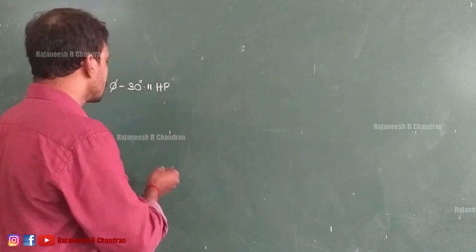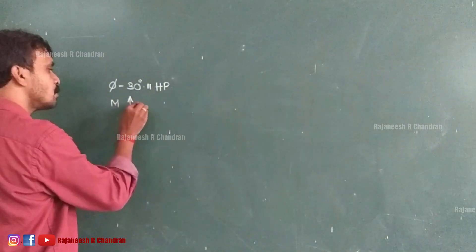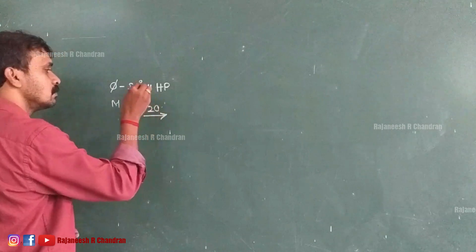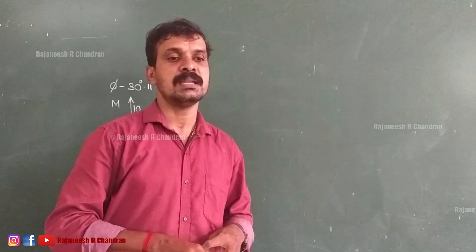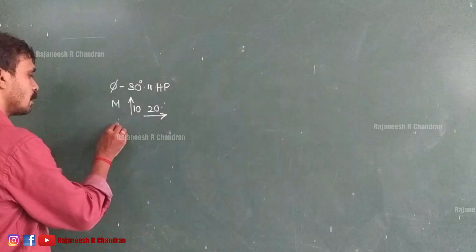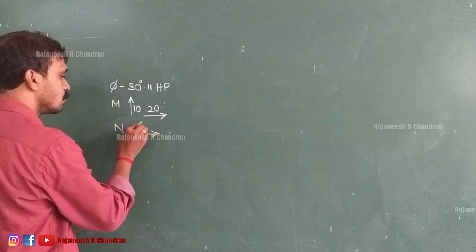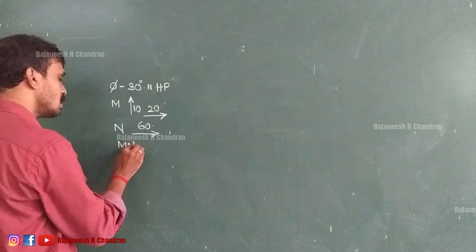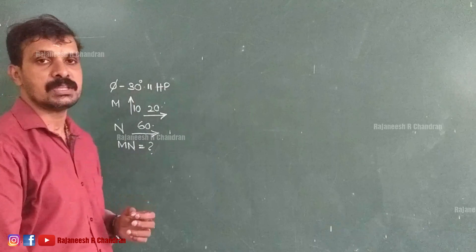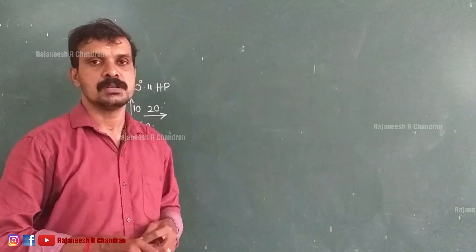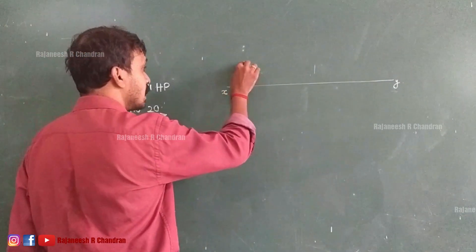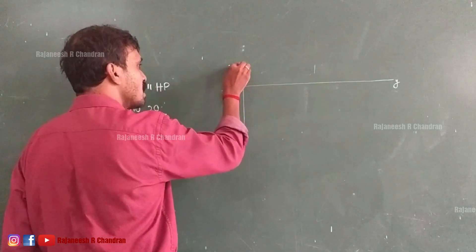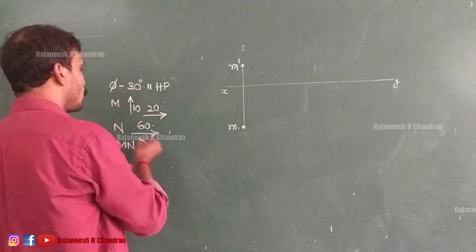Point M is 10mm above the reference plane and 20mm in front of VP. The point N is 60mm in front of VP. We have to draw the projections and obtain the true length of the line. We start with the XY line. Point M is 10mm above and 20mm in front, so this gives us M dash and small m. The point M is now plotted.